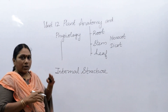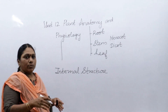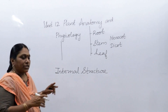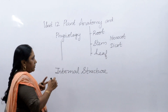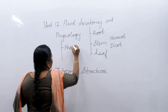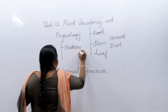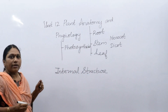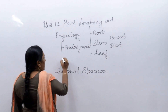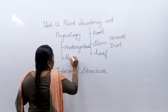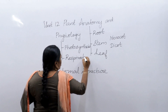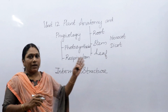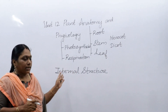Now coming to physiology — this is nothing but the functions going on inside a plant body. Just as we have many functions in a human body like digestion and circulation, likewise in plants we have two main functions: one is photosynthesis, the process by which a plant prepares its own food, and the other is respiration, the process by which a plant gets energy.